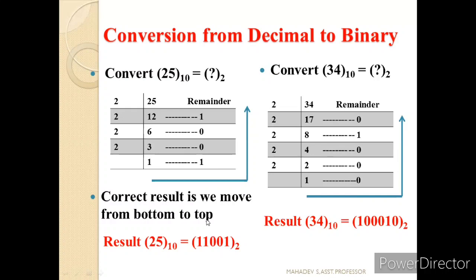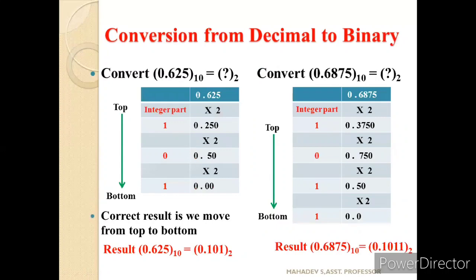Let us see one more example. When we divide 34 by 2, the quotient is 17 and the remainder is 0. Dividing 17 by 2: quotient 8, remainder 1. Dividing 8 by 2: quotient 4, remainder 0. Dividing 4 by 2: quotient 2, remainder 0. Dividing 2 by 2: quotient 1, remainder 0. Moving from bottom to top, the decimal number 34 equals 100010 base 2.